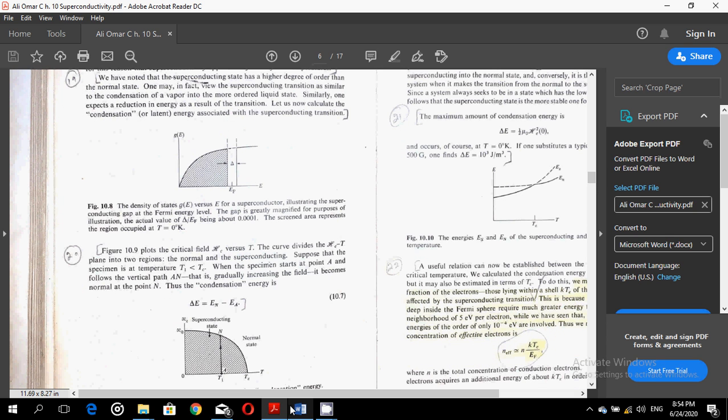Now figure 10.9, shown in the bottom here, plots the critical field Hc versus T. The curve divides the Hc versus T plane into two regions, the normal and the superconducting. Suppose that the specimen is at temperature T1 which is less than Tc. When the specimen starts at point A in the figure and follows the critical path AN, shown as the perpendicular, that is gradually increasing the field, it becomes normal at the point N. Thus, the condensation energy can be written as delta E is equal to EN minus EA.